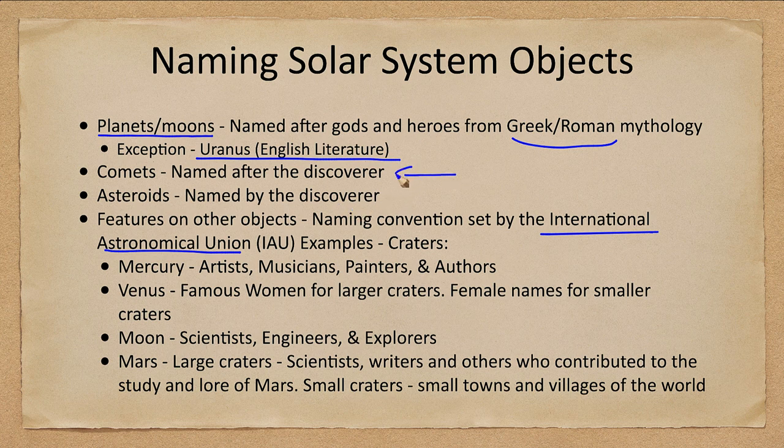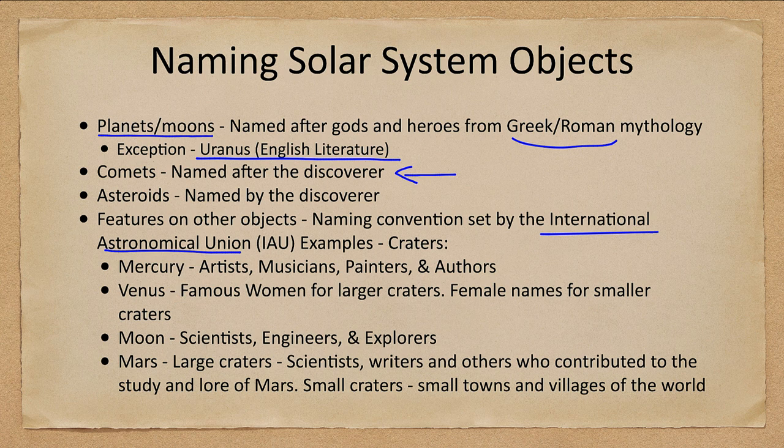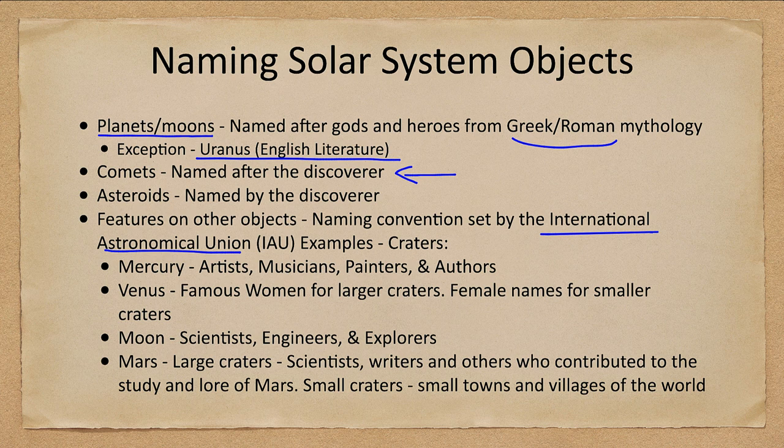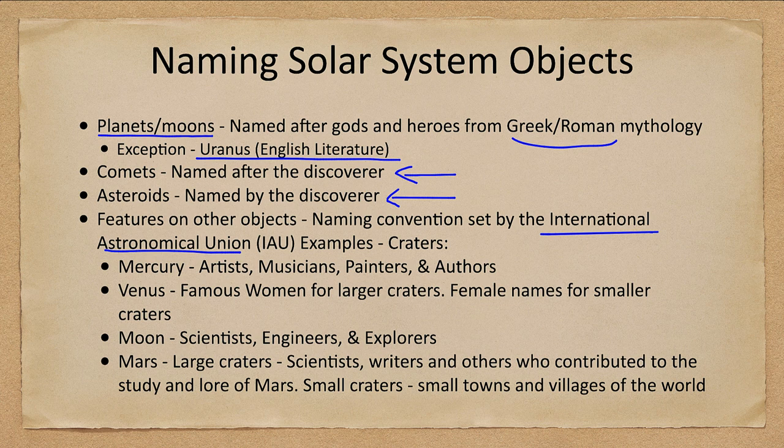Comets are named after the discoverer. So if you discover a comet, it would have your name attached to it if you are the first to discover it. With most automated methods looking for comets now, many comets currently found are found by automated telescopes and are named after them. Asteroids are named by the discoverer. So if you discover a new asteroid, you get to pick a name subject to certain restrictions on it, but you can select a name for that asteroid.